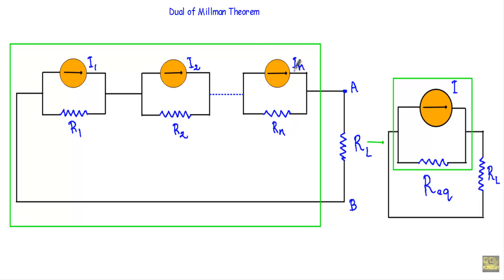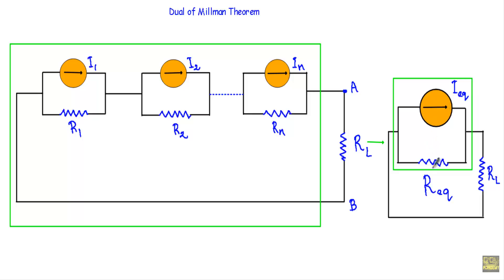If these parallel combinations of current source and resistance are connected in series — that means the parallel combination of I1, R1 is in series with the parallel combination of I2, R2, and the parallel combination of In, Rn — then we can replace the total current through the A, B path by an equivalent current source in parallel with a resistance R equivalent.